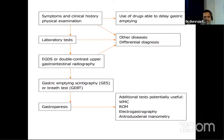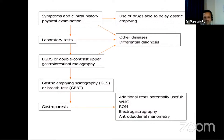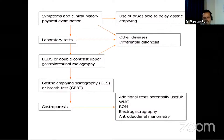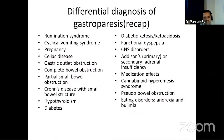A diagnostic flowchart summarizes the approach: the patient presents with symptoms and physical findings; drugs delaying gastric emptying are excluded; laboratory tests rule out other diseases; esophagogastroduodenoscopy or double-contrast upper GI radiography excludes obstruction and ulceration; then gastric emptying scintigraphy or breath test is performed. If positive, gastroparesis is diagnosed. Additional potentially useful tests include the wireless motility capsule, radiopaque marker test, electrogastrography, and antroduodenal manometry. Clinical severity is then scored to guide management.